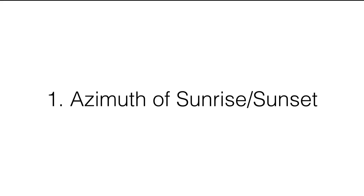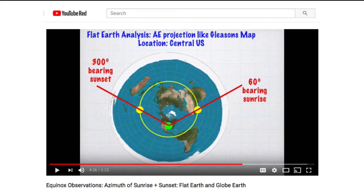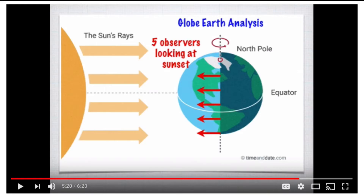Number one: azimuth of sunrise and sunset. Azimuth simply means what direction — like north, south, east, or west on the compass. If you have a flat earth map and plot where the sun would be at sunrise and sunset, you can measure the predicted azimuth. Whereas on the globe earth model, since the terminator line goes north-south, everyone will see the sunrise and sunset at due east and due west.